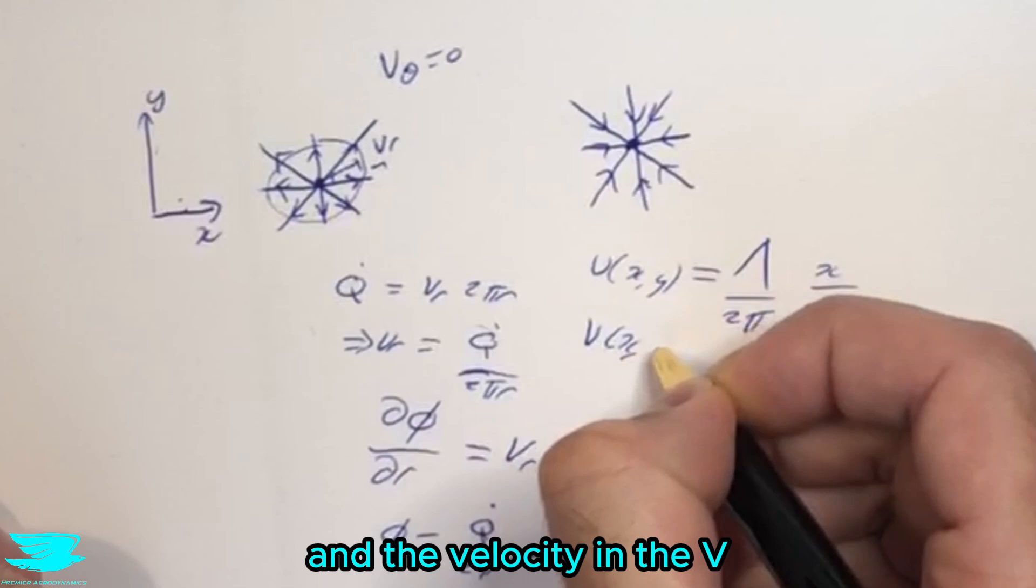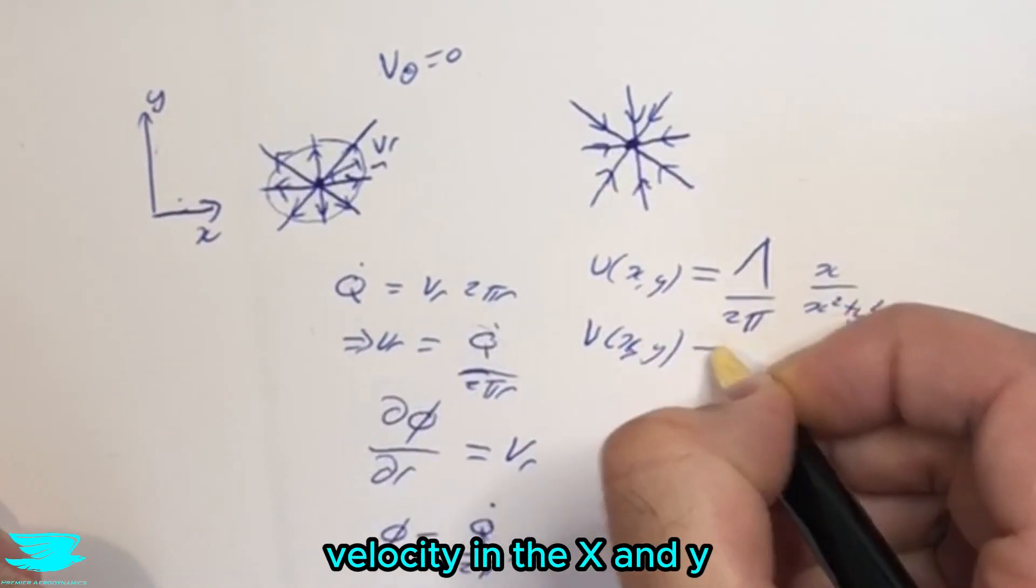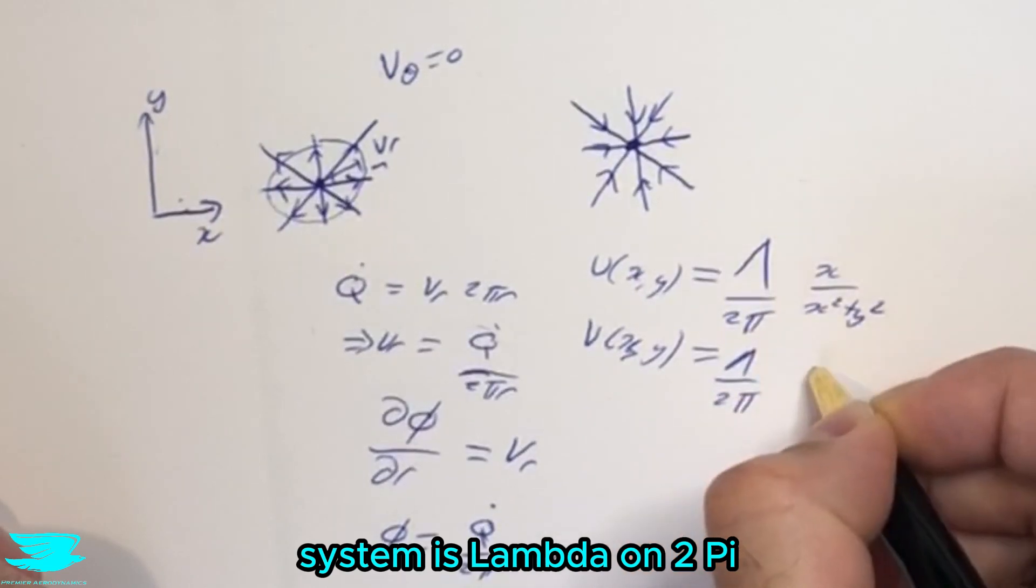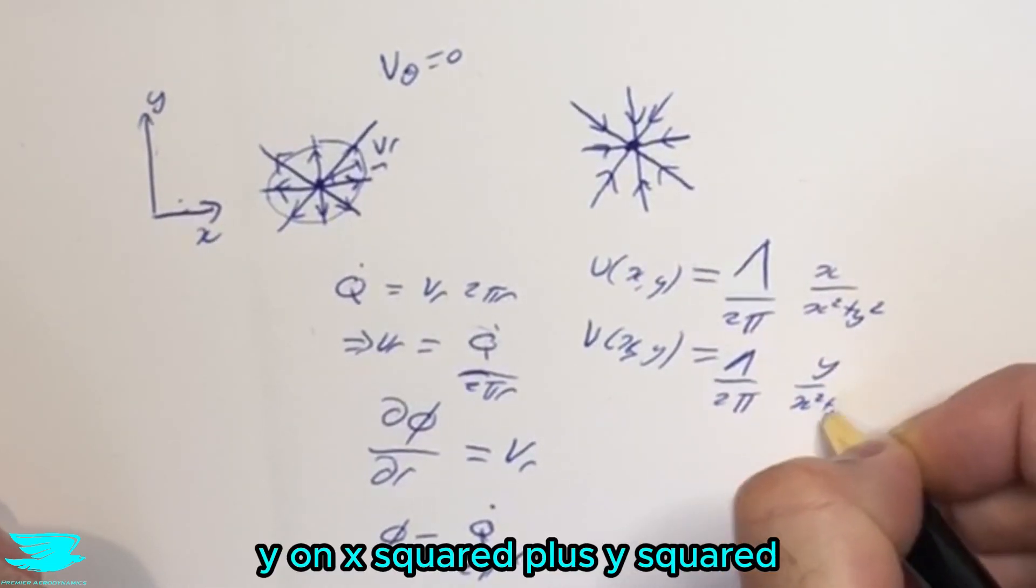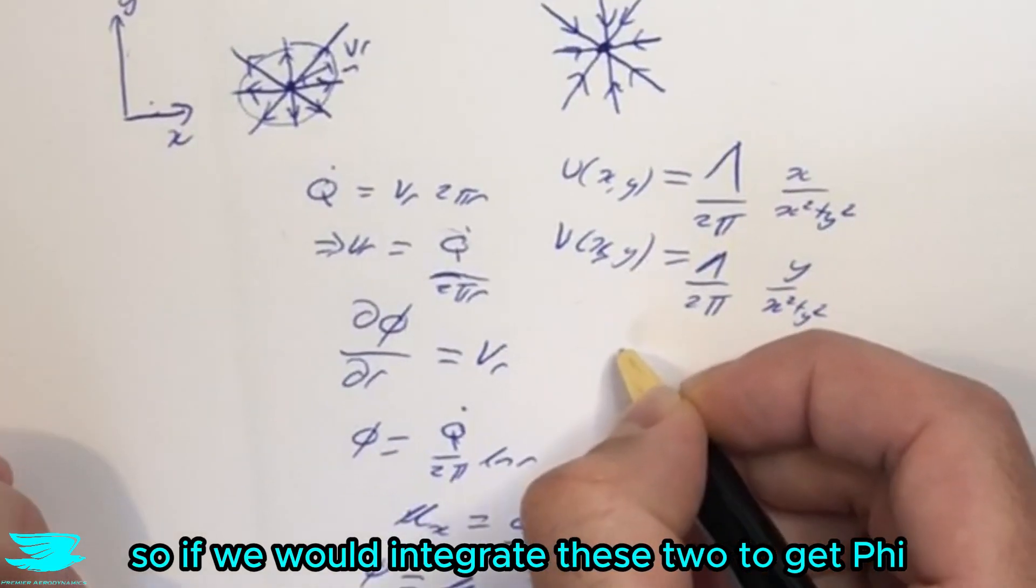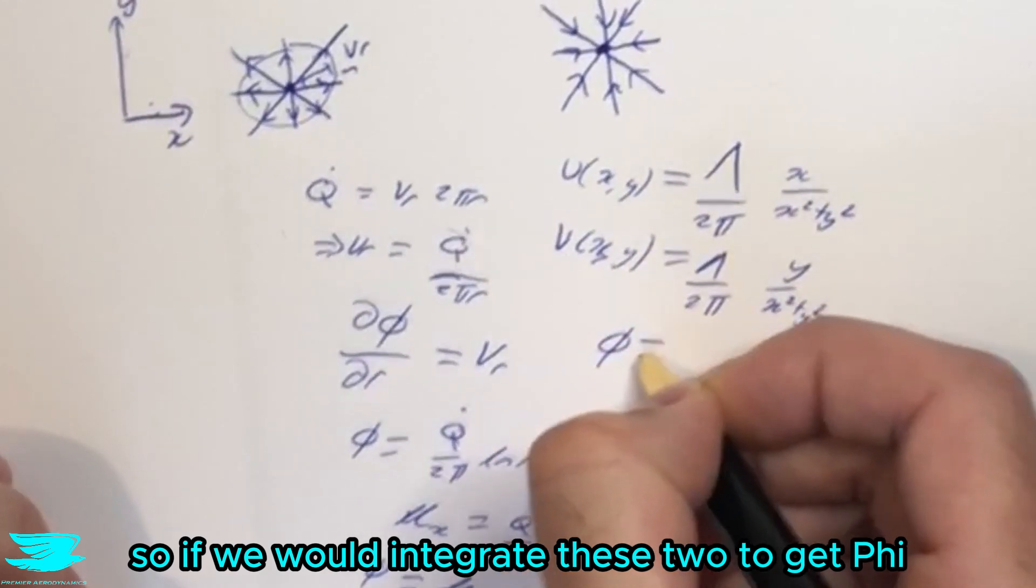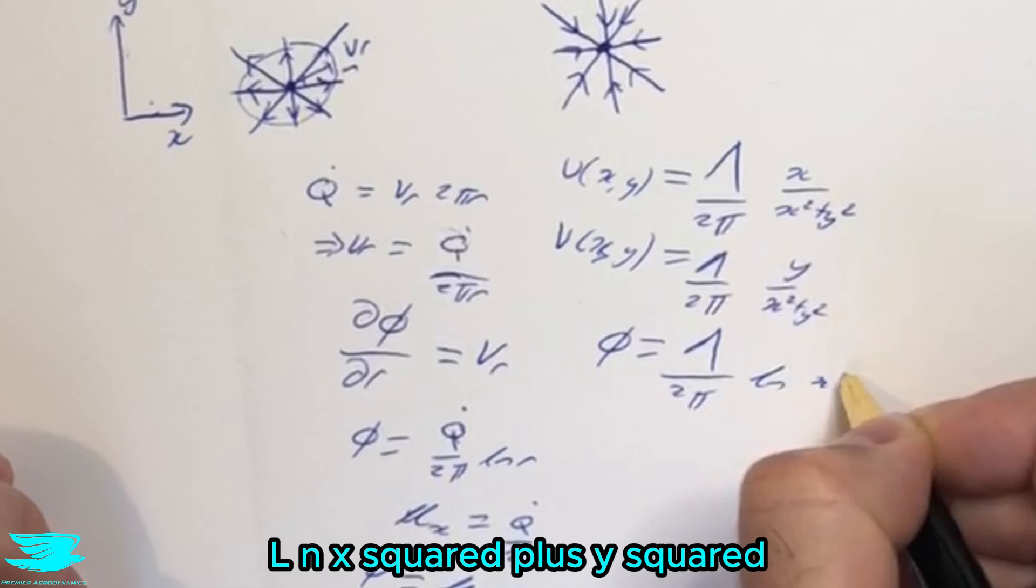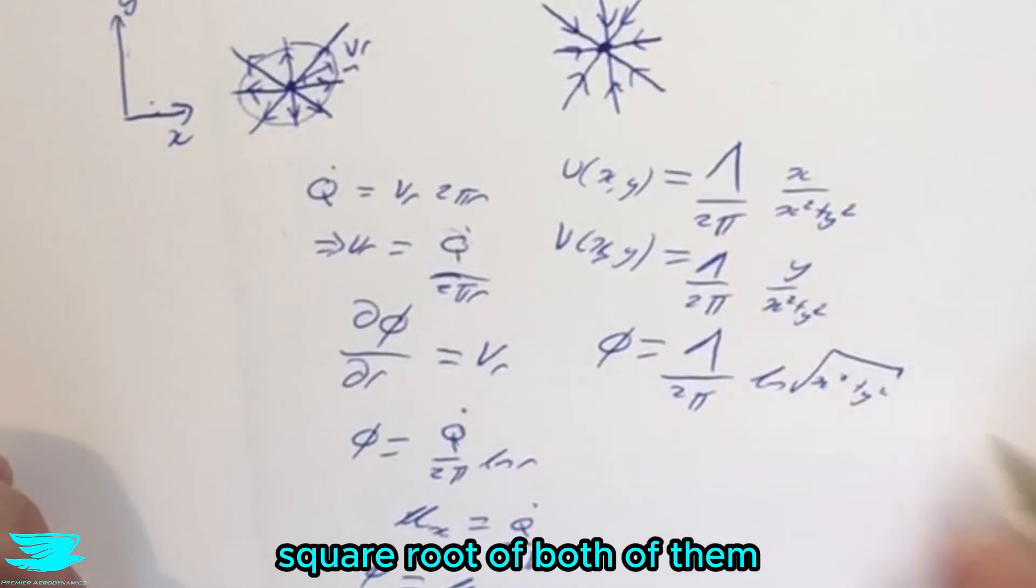And the velocity, the v velocity in the x and y system is λ over 2π times y over x squared plus y squared. So if we were to integrate these two to get φ, we would then get λ over 2π times ln of the square root of x squared plus y squared.